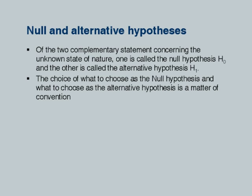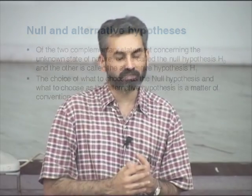This is the language used in hypothesis testing. There is something called the null hypothesis and something called the alternative hypothesis. The null hypothesis is usually used for the status quo, and the opposite is the alternative hypothesis. Of the complementary statements concerning the unknown state of nature — in this case the effectiveness of the new drug — one is called the null hypothesis and the other is called the alternative hypothesis. We accept both possibilities initially and then look for evidence regarding one of them. One is taken as the null hypothesis and we look for enough evidence to reject it.